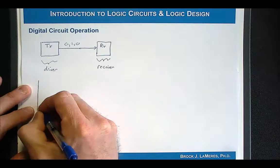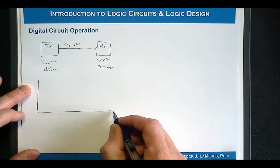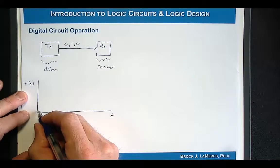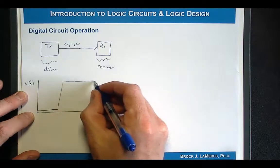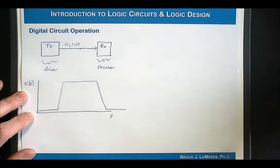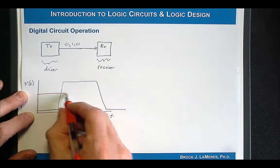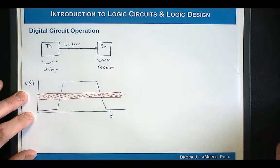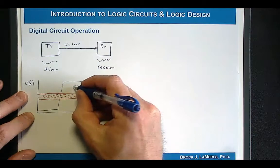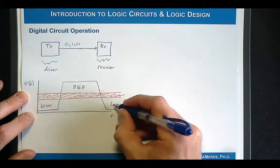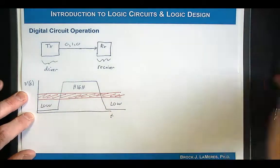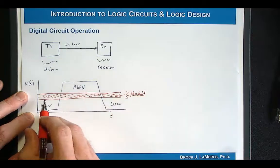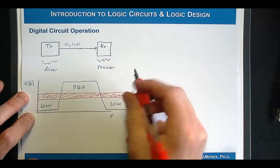Typically we use voltage to represent our two states. If we plot voltage versus time, a digital signal looks like a square wave. One of the things we can do is define a region in the middle called the threshold region. This region divides the signal into two regions — up here we call this a high, and down here we call this a low. It really is higher or lower than this threshold or switching region.